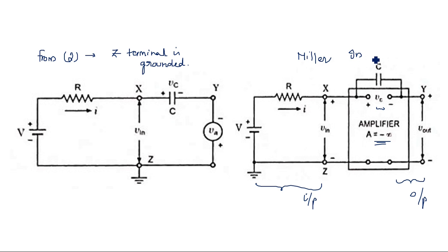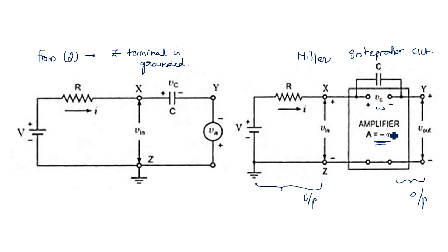This is the Miller integrator circuit. The Miller integrator circuit is nothing but the same resistance and capacitance divided, with an amplifier incorporated in between, dividing the circuit into an input circuit and an output circuit. Because of this incorporation of the amplifier, a constant current flows through the capacitor so that the capacitor charges linearly. This is the main purpose behind the Miller integrator.